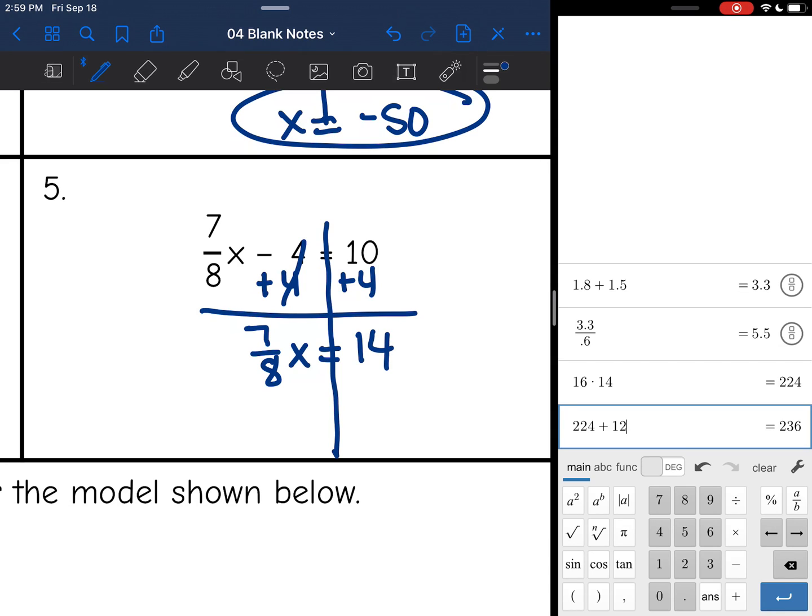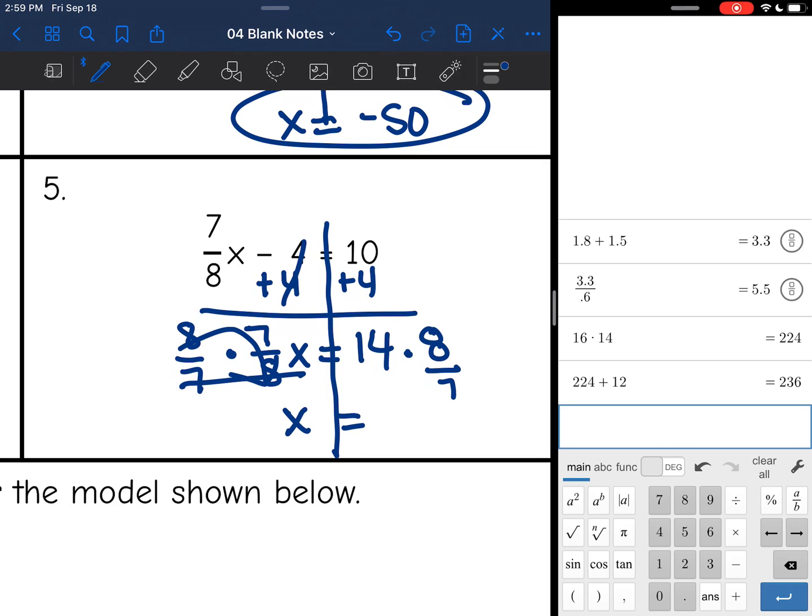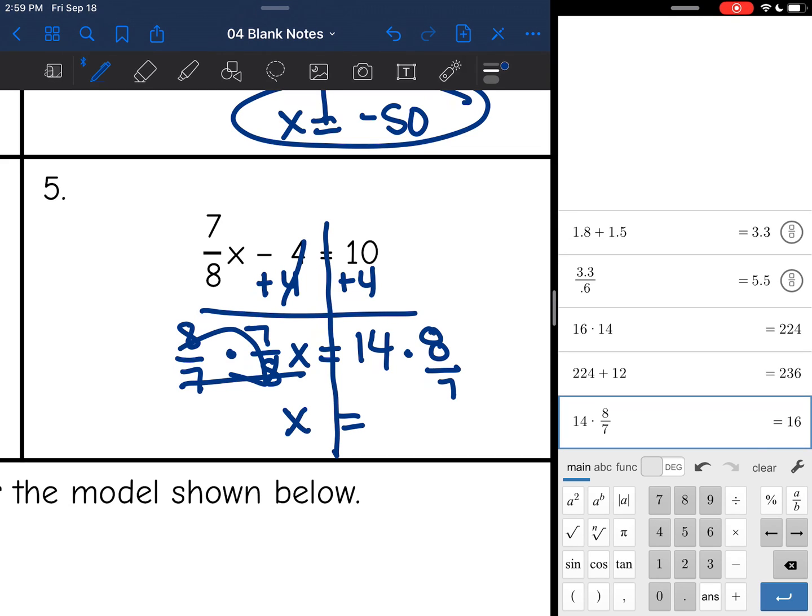And then remember, when I have a fraction coefficient, I multiply by the reciprocal to undo that. Now x is by itself because that goes to 1. And my answer will be whatever 14 times 8/7 is. And I get 16.